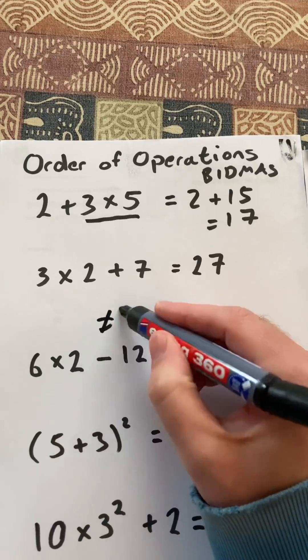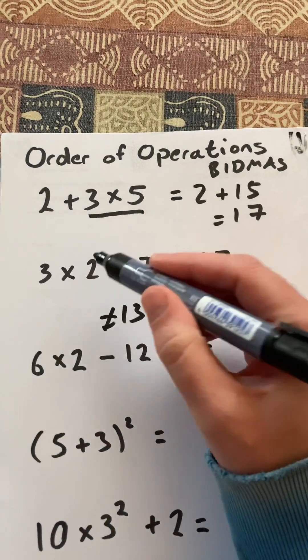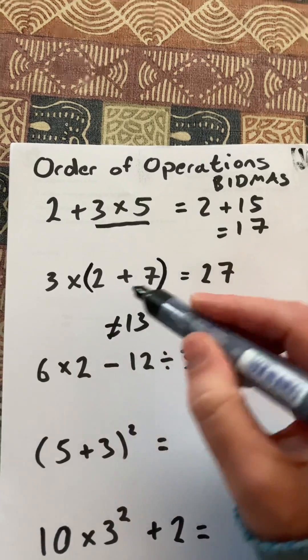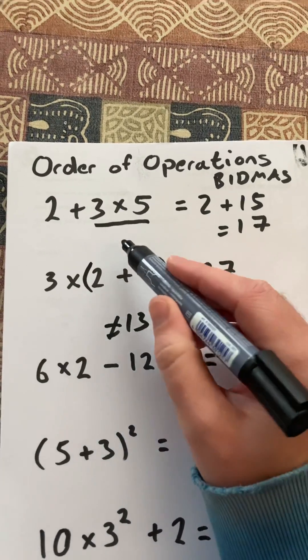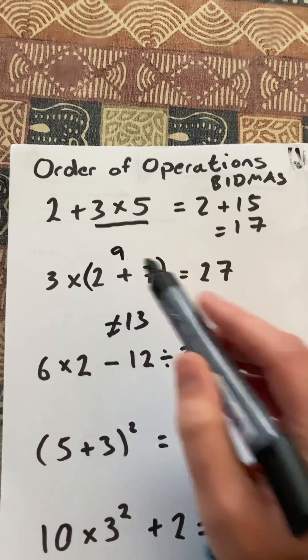So it's not 13, I've got to make it 27. So I'm going to put brackets there, so 2 + 7 is then 9, and 3 × 9 is 27.